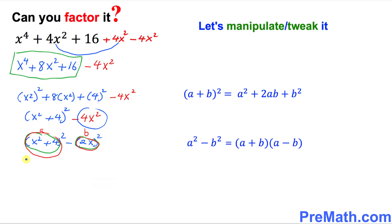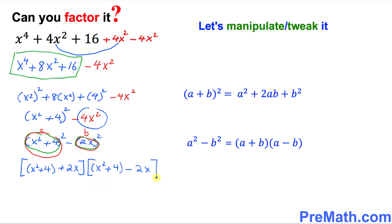So I can write (x² + 4 + 2x) times (x² + 4 − 2x). Here x² + 4 is a and 2x is b — a plus b times a minus b.